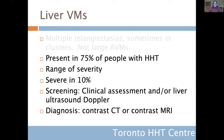About 75% of people with HHT have liver vascular malformations, based on research studies using multiphase CT scans. But there is a continuum of severity — most people have a small number of telangiectasias and never have symptoms. Only about 10% of people with HHT develop many telangiectasias in the liver and clinical complications or symptoms from them. Those are the patients where we recommend treatment.